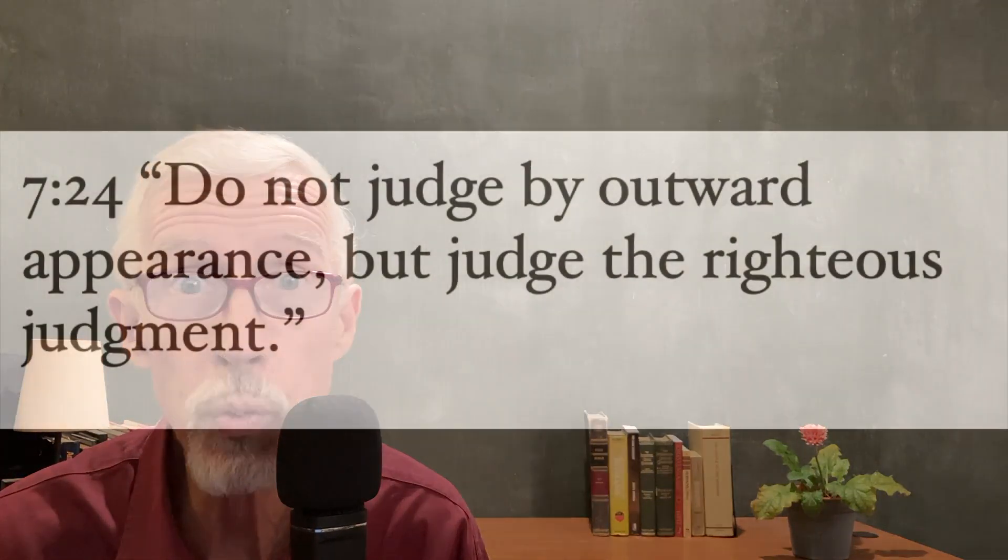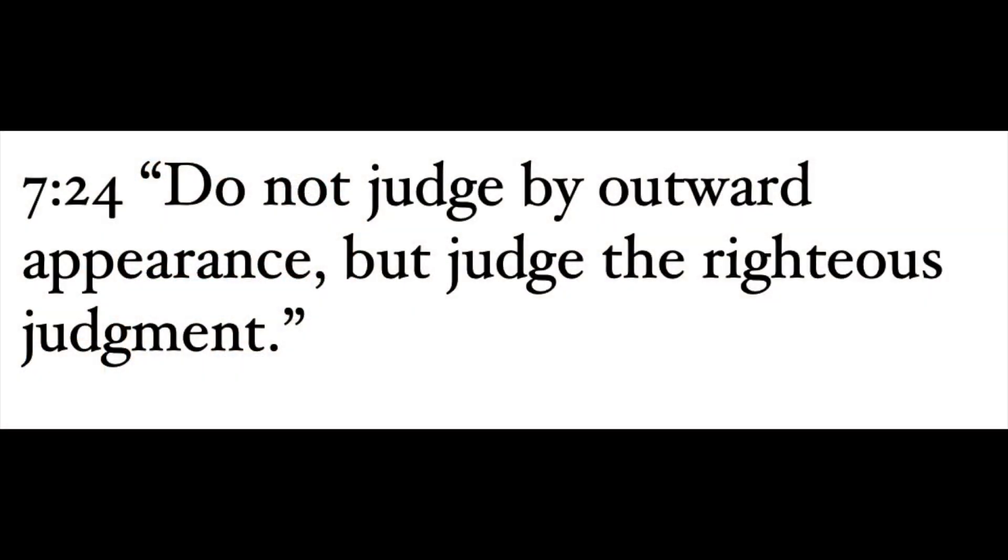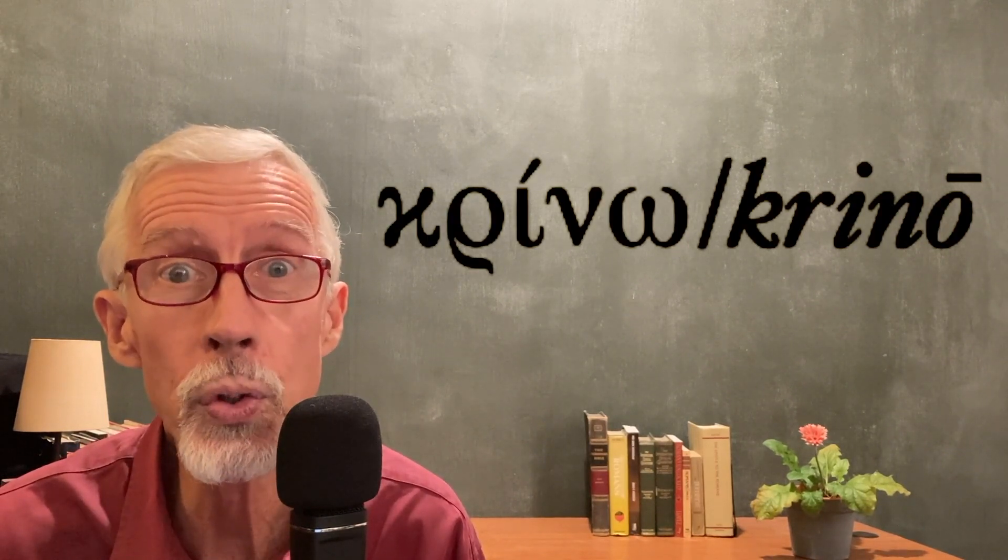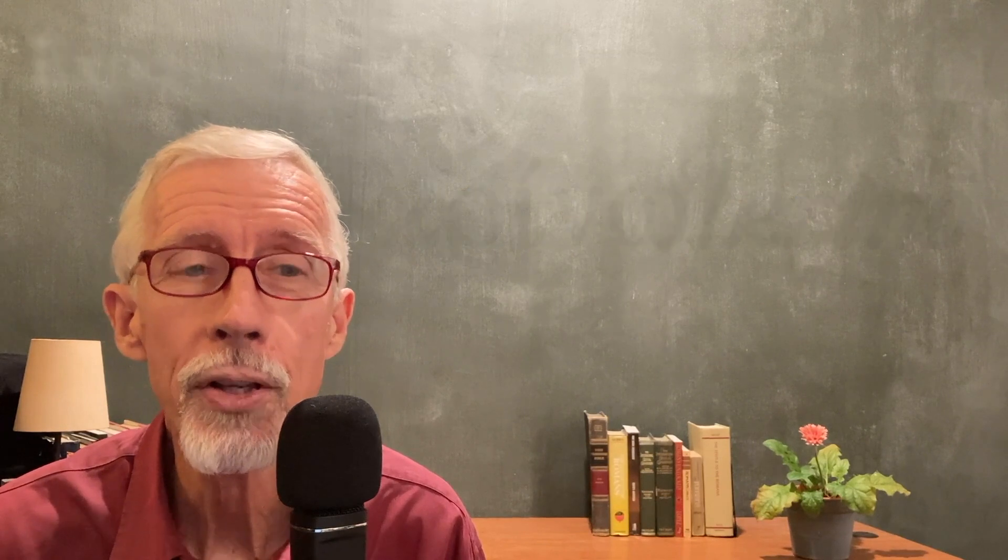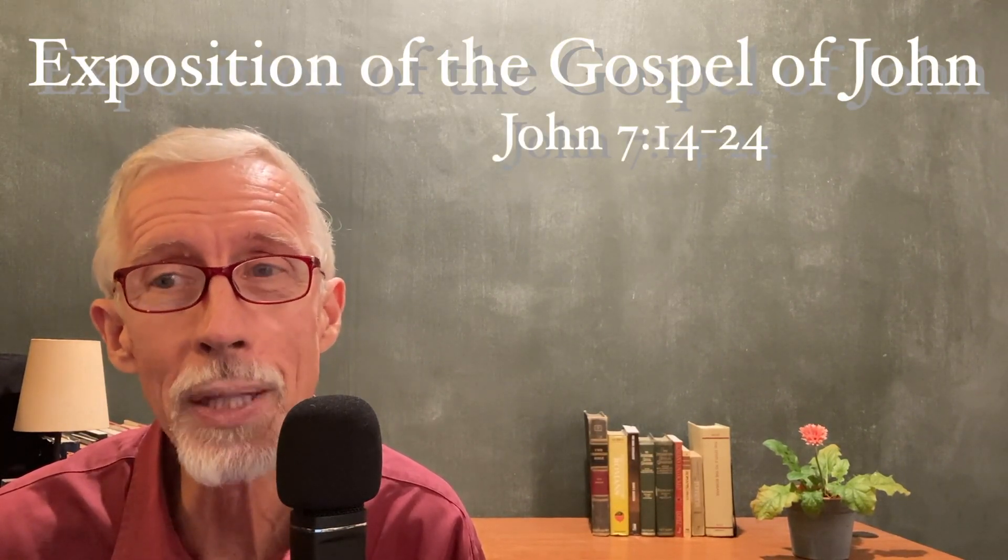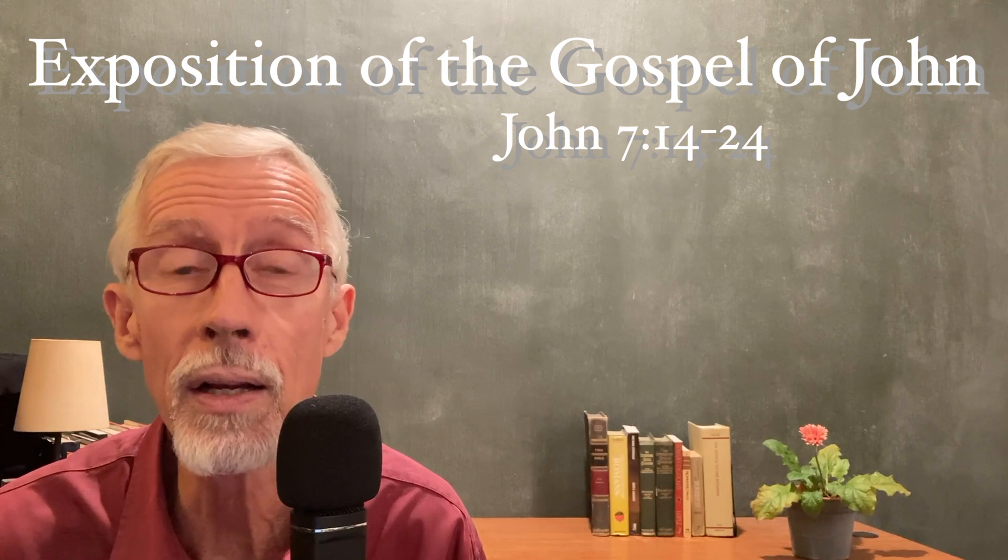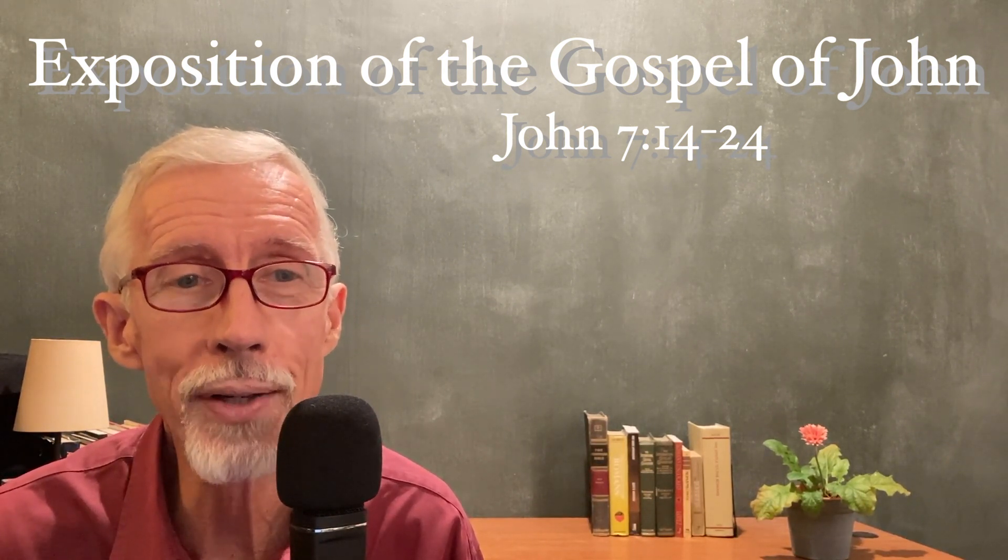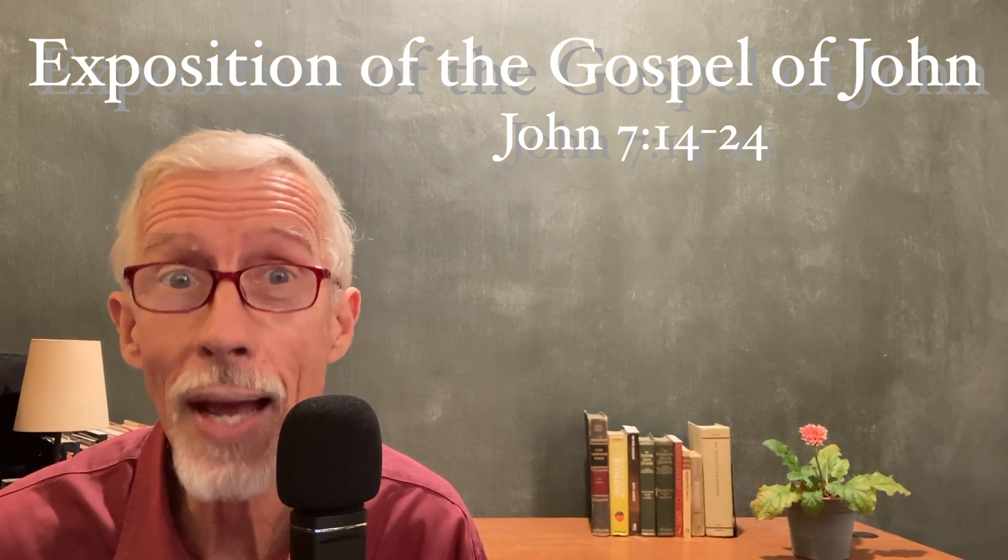Chapter 7, verse 24. Do not judge by outward appearance, but judge the righteous judgment. He makes their hypocrisy obvious, and they are told to reject it. The term judge here includes the concept of differentiating between the true and the false. So in this passage, we have seen part of the Lord's explanation about his teaching being from the one that sent him, and he focuses on their primary objection that he did a miracle on the Sabbath.